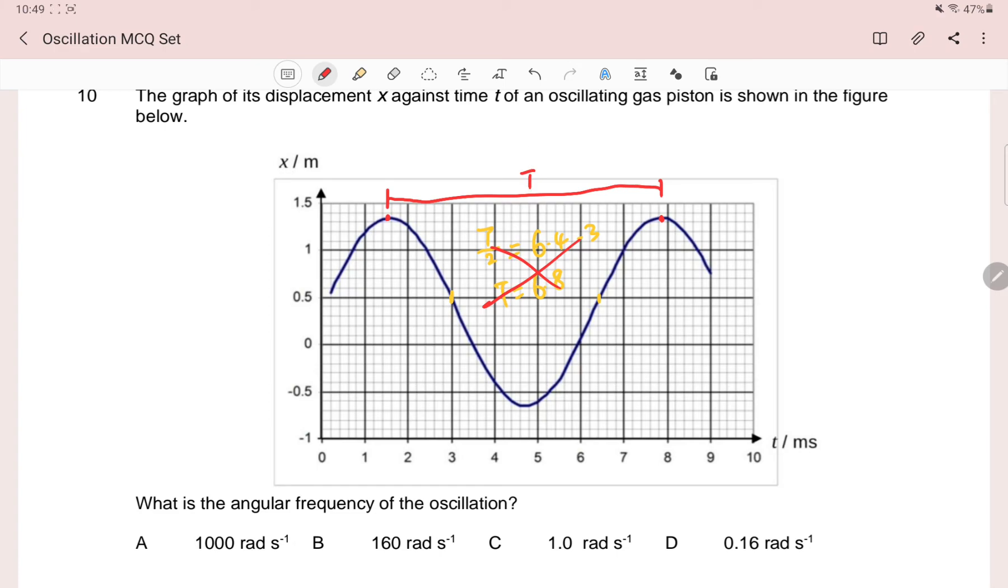You go on and use omega equals 2π over T and you calculate. Also take into account that the time here is milliseconds. You see in the options you only have two different numerical values.